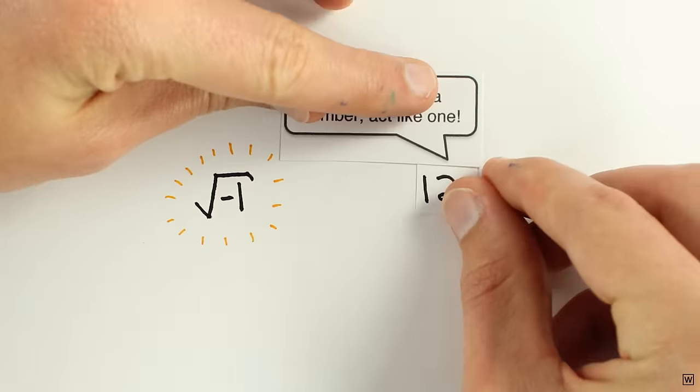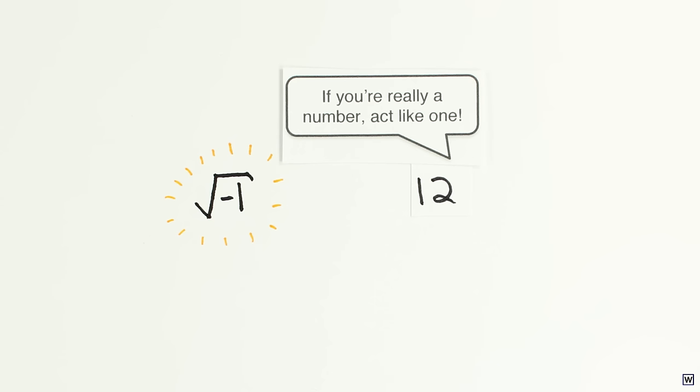Let's make sure we're clear about what it means for the square root of negative 1 to be its own number. If our new number is truly a discovery, and not an invention, it should behave like the other numbers we already know about. It should follow the established rules of algebra and arithmetic.